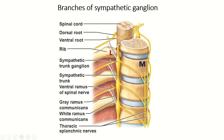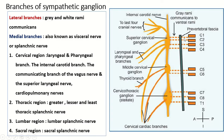The medial branch or splanchnic branch also communicates with some of the cranial nerves. The lateral branch, the communicating branch, connects with the spinal nerve, while the medial branch of the sympathetic ganglion communicates with some cranial nerves. The lateral branch is known as the gray rami and white rami communicants; the medial branch is known as the visceral nerve or splanchnic nerve.